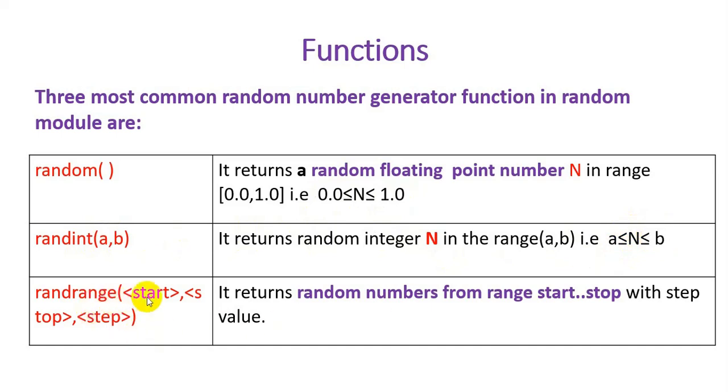The randrange() function takes start, stop, and step parameters. It returns a random number from start to stop with the given step value.